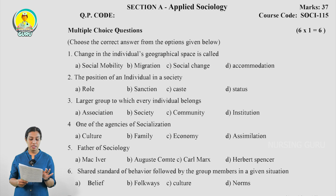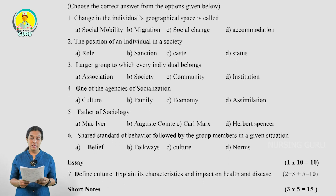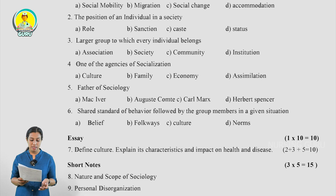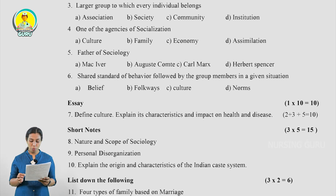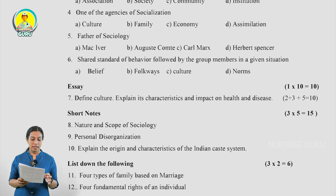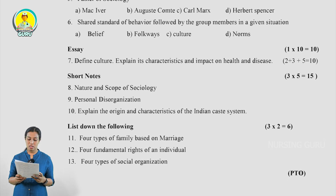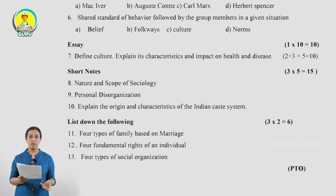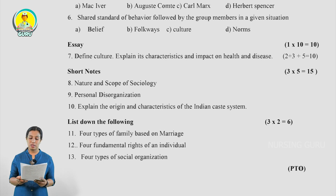Section A — Applied Sociology has 6 MCQ questions totaling 6 marks. The essay question, Question 7, is: 'Define culture. Explain its characteristics and impact on health and disease.' It carries 2 plus 3 plus 5 equals 10 marks. The 3 short notes are: Nature and Scope of Sociology, Personal Disorganization, and Origin and Characteristics of Indian Caste System. These are repeatedly asked questions. The last type is 'List Down the Following' — 3 questions of 2 marks each: 4 types of family based on marriage, 4 fundamental rights of an individual, and 4 types of social organization.